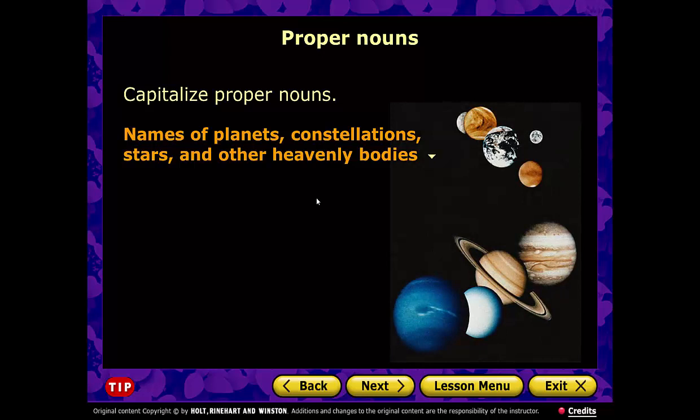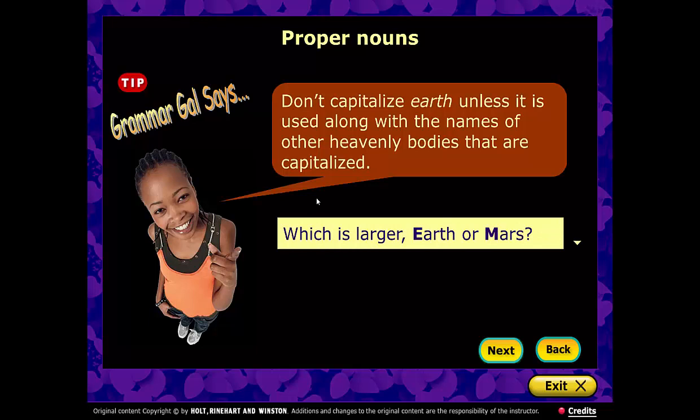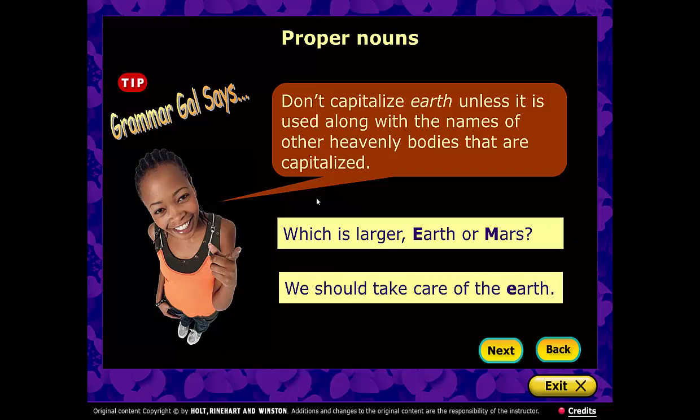Planets, constellations, stars, and other heavenly bodies are capitalized: Saturn, the Milky Way, Orion, Andromeda Galaxy, Great Nebula. However, our own planet Earth is an exception — we don't capitalize Earth unless it is used alongside the names of other capitalized heavenly bodies. So 'Which is larger, Earth or Mars?' — capitalize it. But 'the earth beneath our feet' — lowercase e.